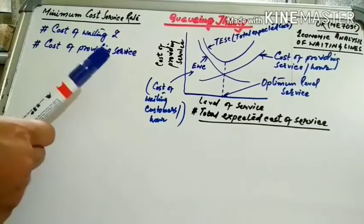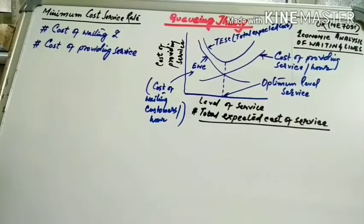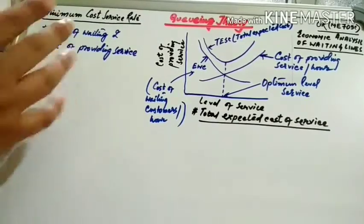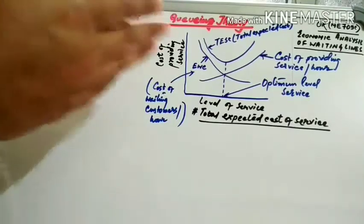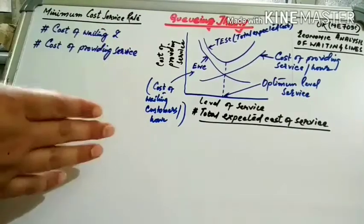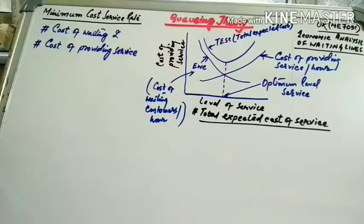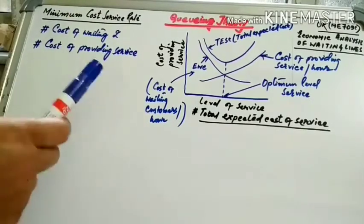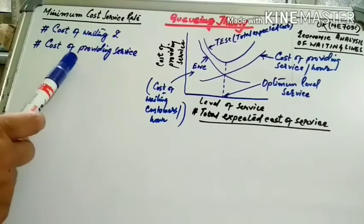In order to solve a queuing problem, the service facility must be manipulated so that an optimum balance is obtained between the cost of waiting and the cost of providing service. This aligns with the core concept of optimization in operational research.